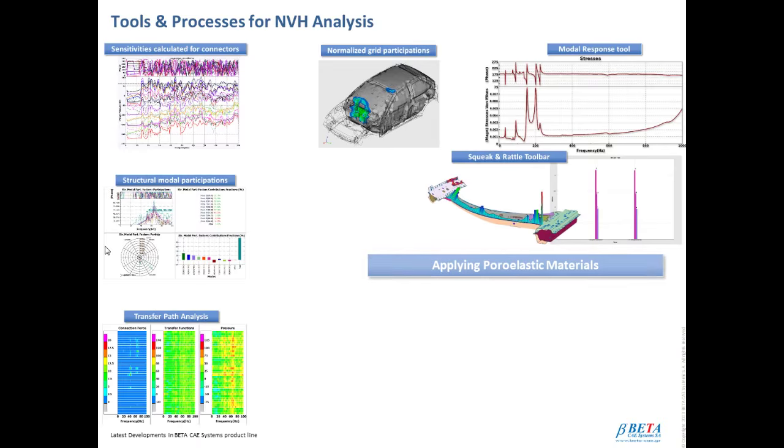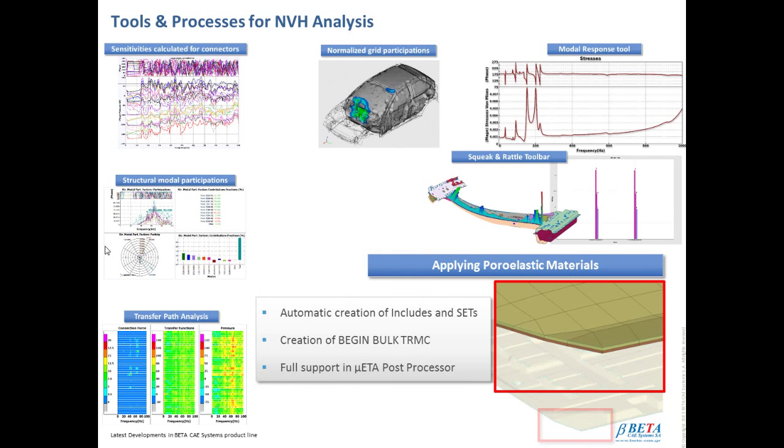Last but not least, since version 15, we have the introduction of Nastran poroelastic materials. These Nastran entities simulate poroelastic materials and their glue, for example, the carpet bonded on the floor permanently.